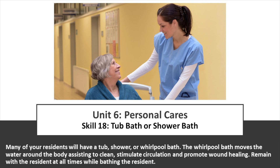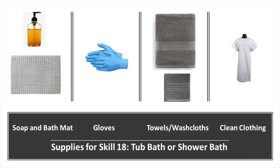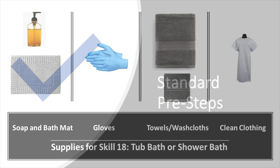Remain with the resident at all times while bathing the resident. Supplies for Skill 18, giving a tub bath or shower bath, include soap, a bath mat, gloves, towels, washcloths, and clean clothing.